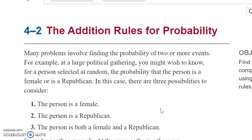In order to be consistent, I want to use the same language as the author. Back in 4-1, we talked about a probability experiment as a chance process that leads to a well-defined result, called an outcome. An outcome is the result of a single trial of a probability experiment. So what we mean by random outcome is that the person you select — everybody has an equal chance of being selected. The experiment is you reach out and pick somebody; the outcome is whether they are a female or a Republican.